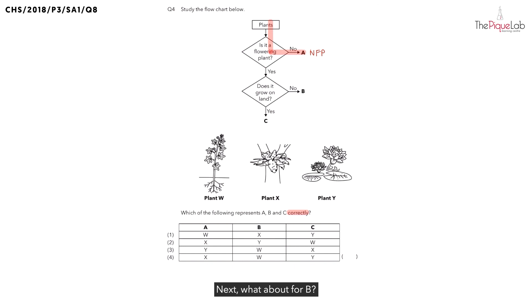What about for B? Same thing. Take a highlighter. I want you to highlight from the start all the way to B. From this, we can see, is B a flowering plant? Yes. So we can write this down. B is a flowering plant. And I'm going to write down FP for short.